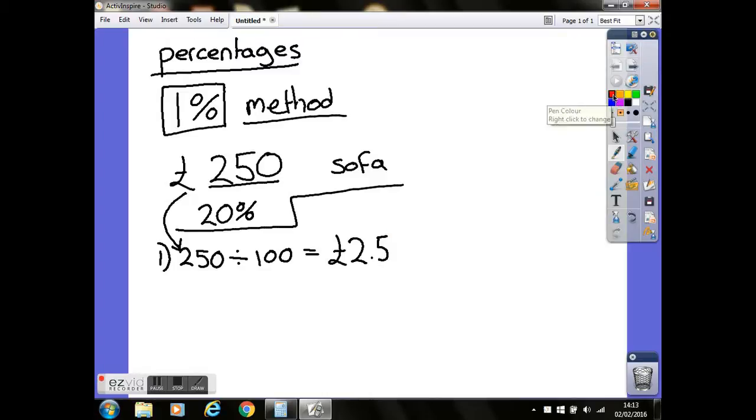Now there's one thing we have to look at here. We're doing currency, so we've got £2.5. Because it's currency, we always have to have two numbers after the decimal point. If there's not two numbers, you can just put a zero on the end—that's £2.50. So what we found here is your 1%.